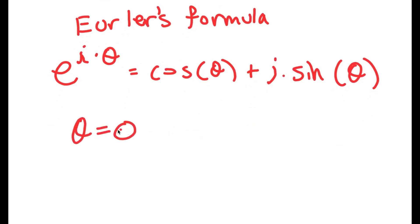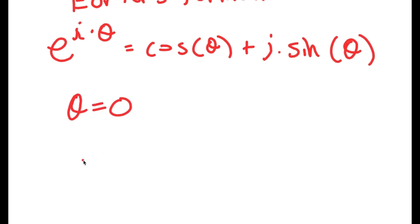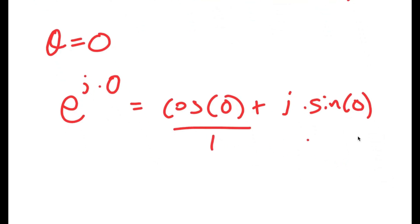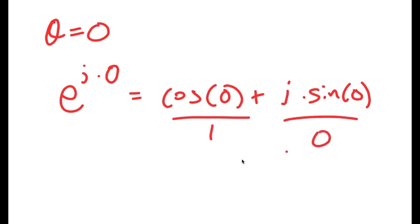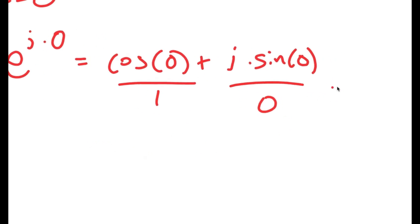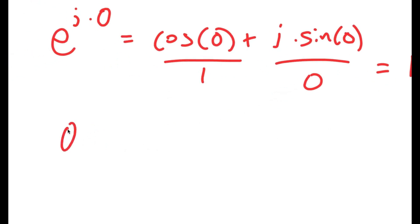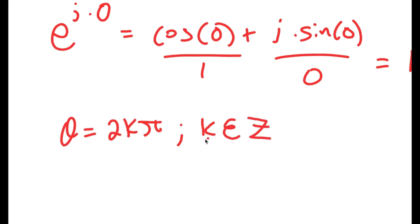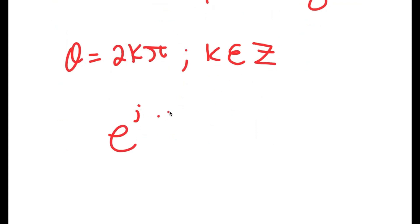Let's say that theta is equal to 0. So now I get e to the power of i times 0 is equal to cosine of 0 plus i times sine of 0. Cosine of 0 is 1, and sine of 0 is 0. So I get this all is equal to 1. Now, what if we say theta is equal to 2k·pi? And k is just a substitution for all real numbers. So now I get e to the power of i times 2k·pi is equal to 1.